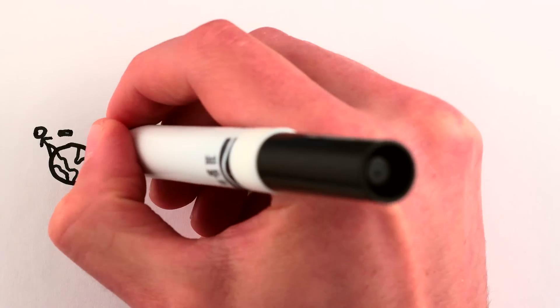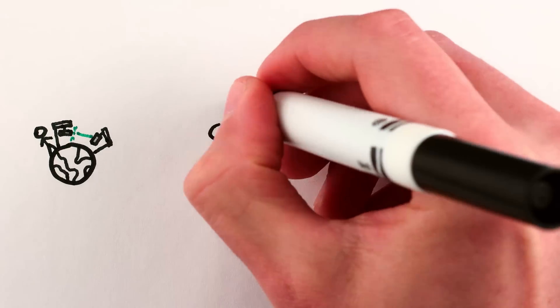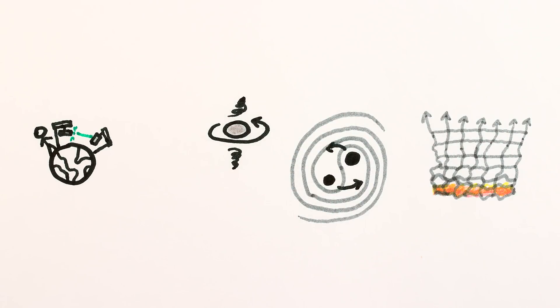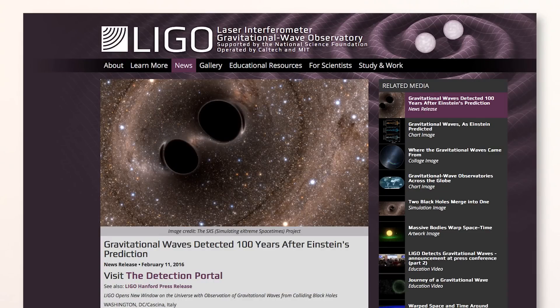And that's why here on Earth we can only detect the biggest, baddest astronomical events, like super-fast-spinning neutron stars or merging black holes or the Big Bang. Though so far, we've only detected black hole collisions.